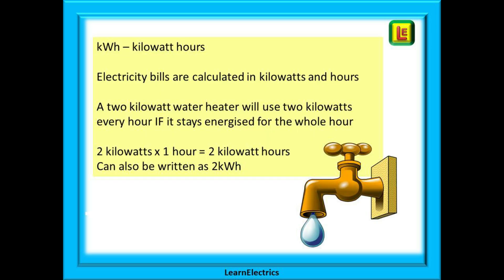The abbreviation KWH stands for kilowatt hours — a kilowatt of energy being used constantly for one hour. Electricity bills are calculated in kilowatt hours; it is their standard unit. A 2 kilowatt water heater will use 2 kilowatts every hour if it stays energized for the whole hour — that is 2 kilowatt hours, also written as 2 kWh.